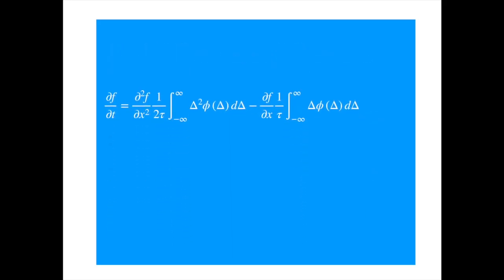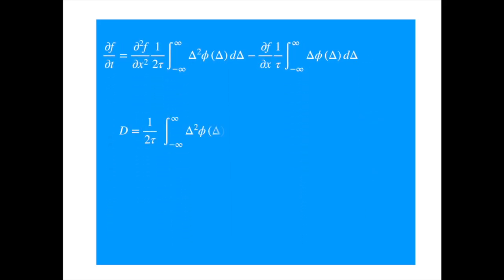Now we recognize the diffusion coefficient, and we can call the average displacement per unit time as the drift, and we get the diffusion convection equation.